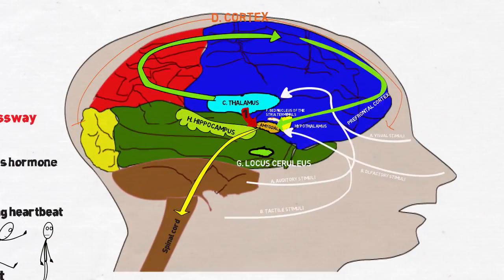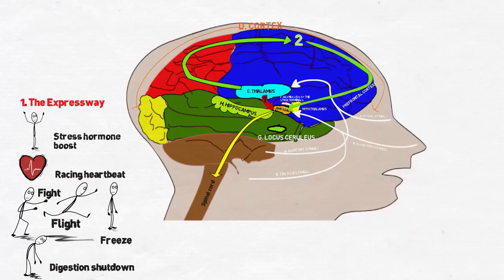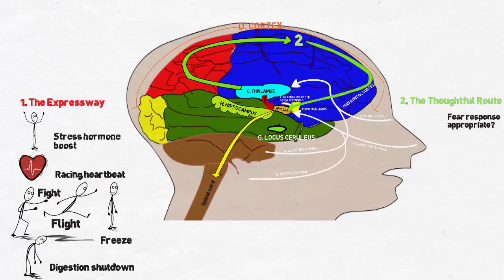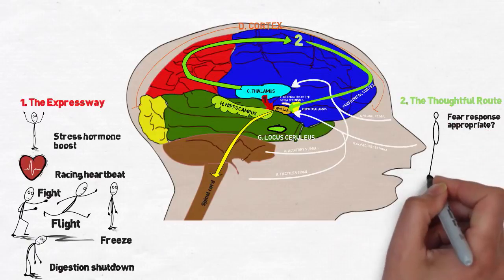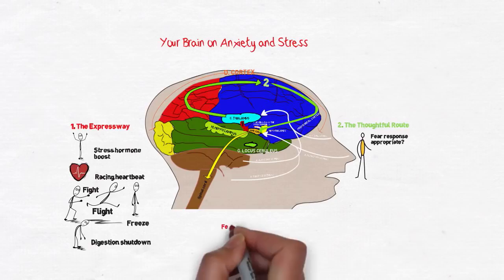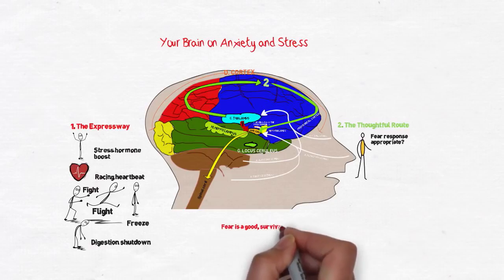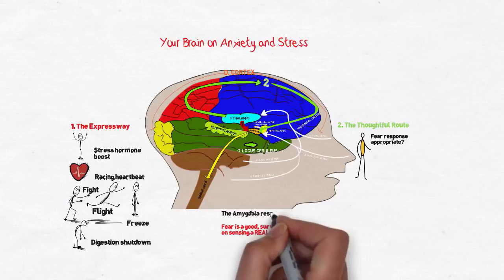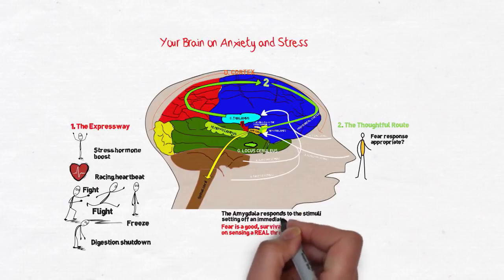Only after the fear response has been activated does the conscious mind kick in. Some sensory information takes a more thoughtful route from the thalamus to the cortex. The cortex decides whether the sensory information warrants a fear response. If the fear is a genuine threat in space and time, the cortex signals the amygdala to continue being on alert. Fear is a good, useful response essential to survival.